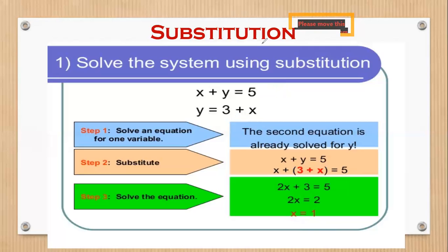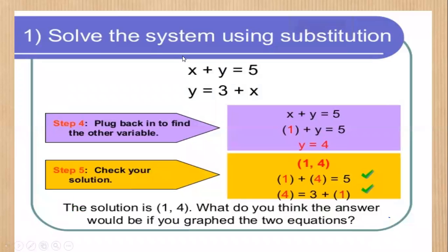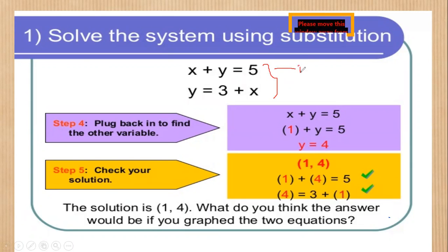Since we already have one of the unknowns, we can now go ahead and look for the other unknown, which is the y value. To find y, we substitute for x in any of the two equations — whether the first or the second — since we already have x as equivalent to 1. If we substitute into the first equation, we get y as 4. Even if you substitute into the second equation, you still get y as equivalent to 4.